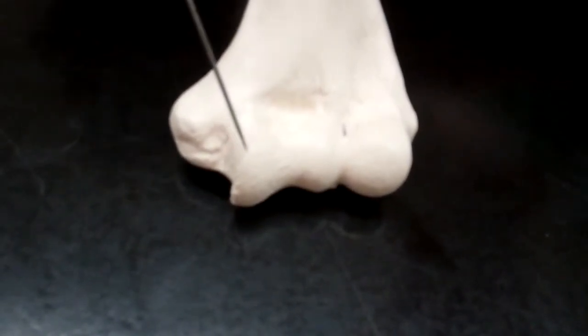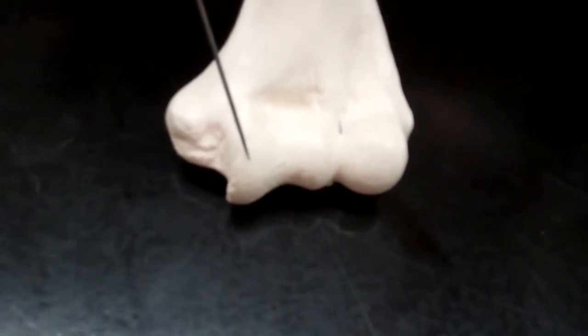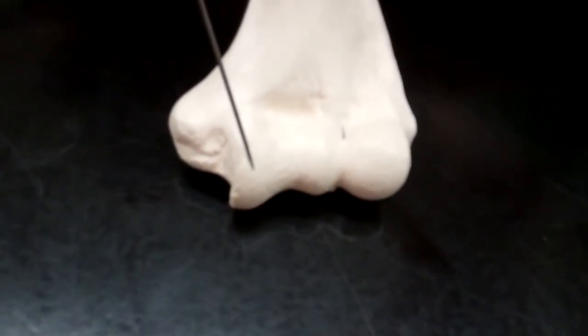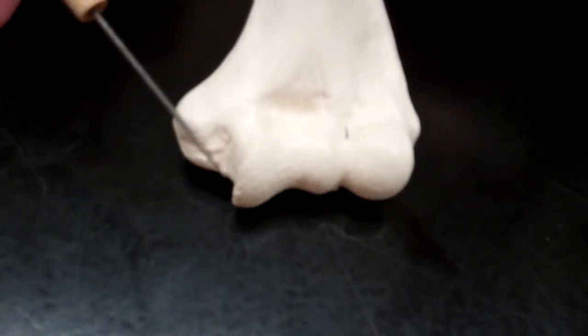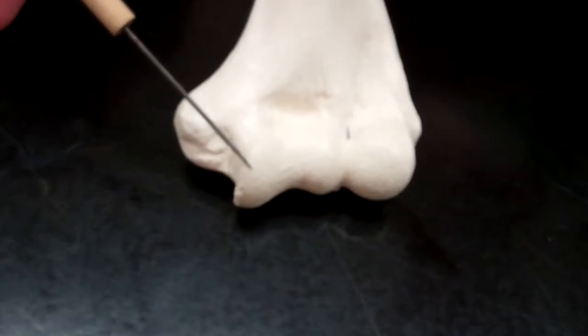This bump here on the medial side is going to be called our trochlea. So the trochlea is going to be on the medial side, which means it's going to be lined up with the head of the humerus.